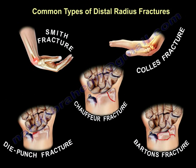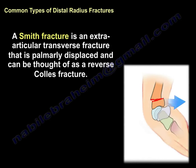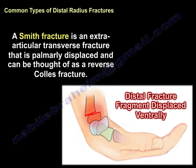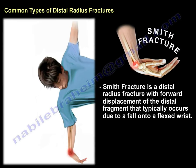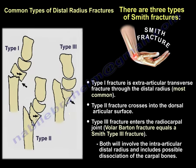Another type is the Smith fracture, predominantly an extra-articular transverse fracture that is palmarly displaced and is always considered a reverse Colles fracture. The fracture fragment is displaced ventrally or palmarly, and it can occur from a fall onto a flexed wrist. Smith fracture has multiple types: Type 1 is an extra-articular transverse fracture through the distal radius and is the most common. Type 2 crosses into the dorsal articular surface, and Type 3 enters the radiocarpal joint, similar to a volar Barton fracture.